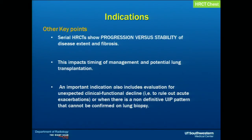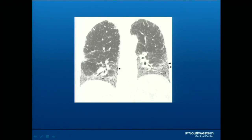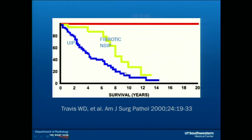An important indication also includes ruling out acute exacerbations in patients who have sudden decline of clinical status, and in patients who cannot get a lung biopsy but have a nonspecific pattern on high-resolution chest CT. It is very important to be able to suggest the pattern of fibrosis on high-resolution chest CT, as seen on this coronal image. The fibrotic changes are predominantly in the lower lobes with a lot of honeycombing — consistent with the UIP pattern, which portends a very poor survival compared to the fibrotic NSIP pattern, which has a much higher survival rate.